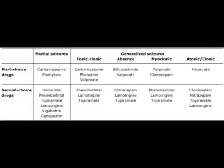For other types of generalized seizures — tonic-clonic, absence, myoclonic, and atonic — carbamazepine is the first line for tonic-clonic seizures. For absence seizures, the first line drug is ethosuximide. Valproate can also be used, but if you have to choose between ethosuximide and valproate, choose ethosuximide.